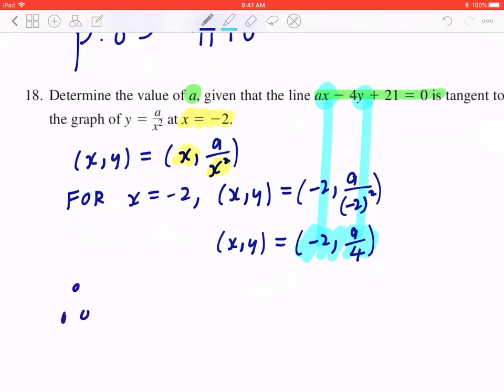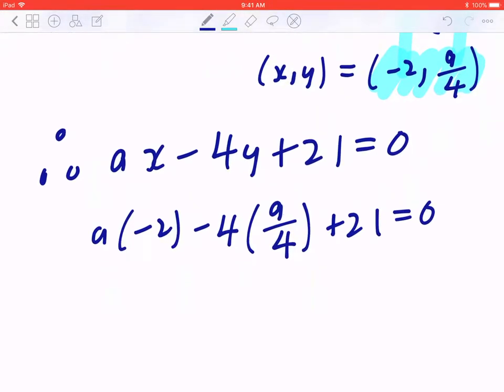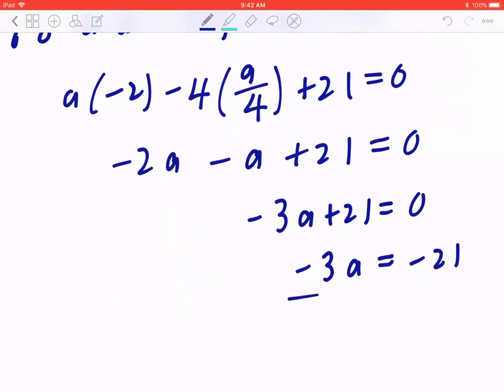Therefore, ax minus 4y plus 21 equals 0. That's given to us. You plug in x to be negative 2. You plug in y to be a divided by 4. And now you can solve for a. Again, a times negative 2 is negative 2a, minus 4a divided by 4 is negative a, plus 21 equal to 0. If you collect like terms, negative 2a minus a is negative 3a plus 21 equal to 0. You can bring 21 to the right. That's negative 21. The opposite of multiplying by 3 is to divide by 3. So a equals to 7.